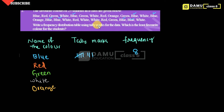Then next is red color. Counting through the red entries: 1, 2, 3, 4. Only four. So red has a frequency of 4. Next one is green. Counting through: 1, 2, 3, 4 tally marks. Green also has a frequency of 4.